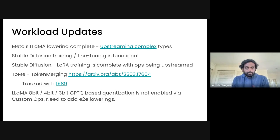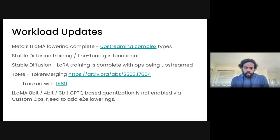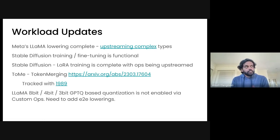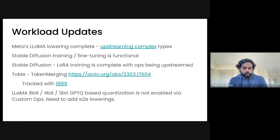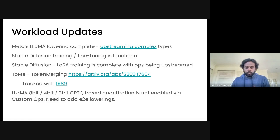The next big thing is that we're pushing on getting LLaMA 8-bit, 4-bit, and 3-bit — and we can do 2-bit also — GPTQ-based quantization. If you're tracking LLMs, GPTQ is the new enabler for running large models on smaller devices like one or two GPUs. Custom ops has already landed and we just need to enable end-to-end lowerings for these models. Then anyone using TorchMLIR should be able to use LLaMA in 8-bit, 4-bit, or 3-bit. However you map the backend to your backend, it should work — we'll verify that through the linear pipeline.